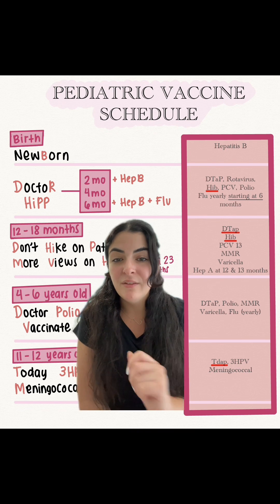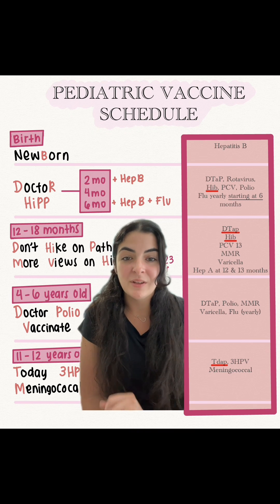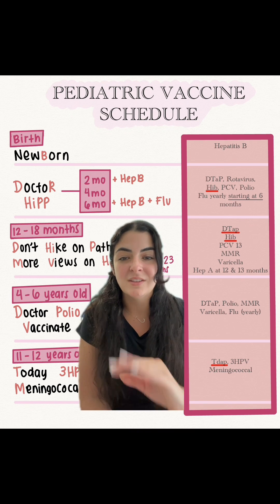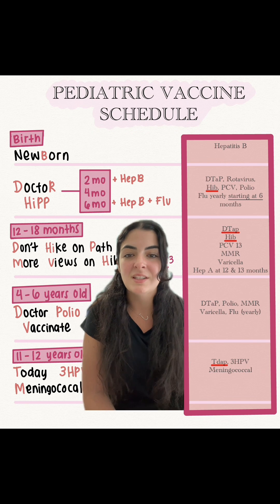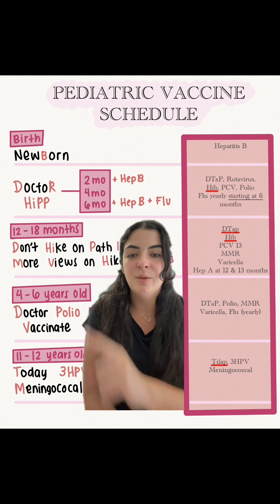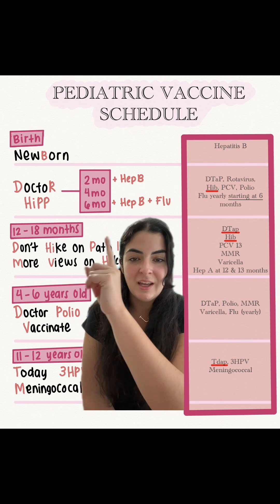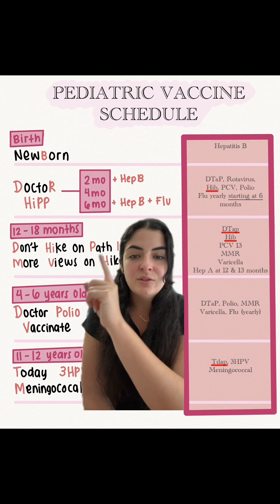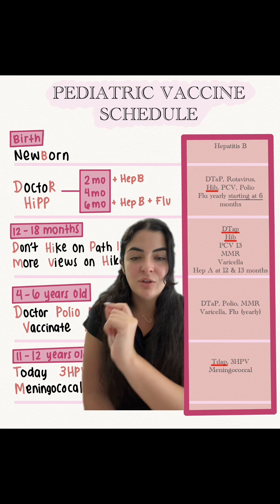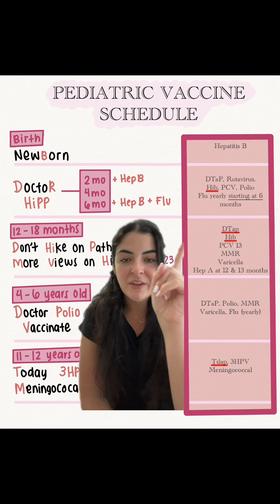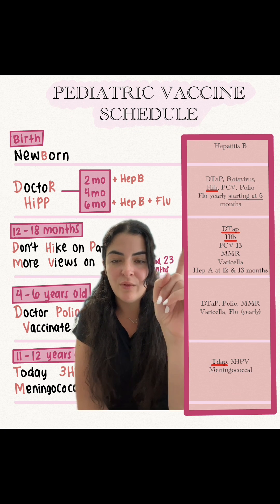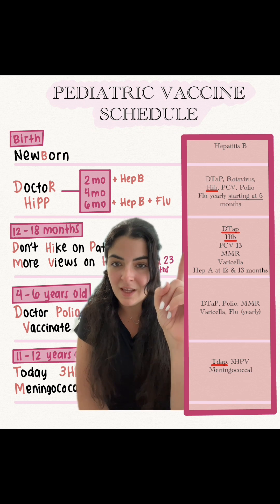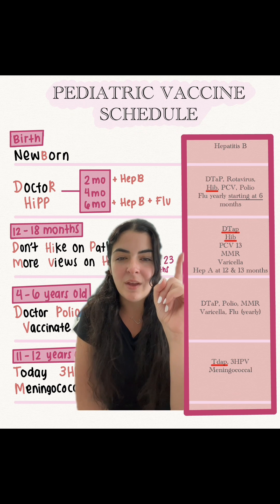Now you might have heard of the mnemonic Dr. HIP. I really like this one. Dr. HIP refers to the ages of 2 months, 4 months, and 6 months. At each of those months, you're going to give DTaP (the D), rotavirus for R, HI in HIP stands for HIB, and then we have PCV and polio.